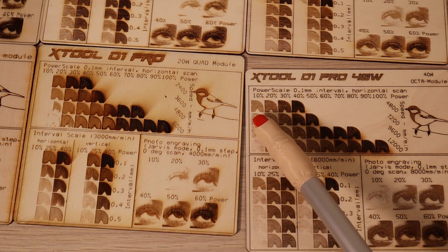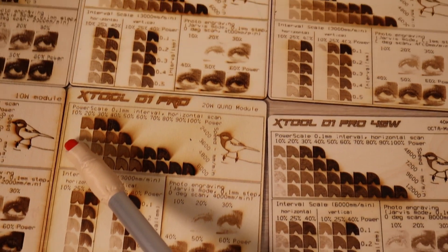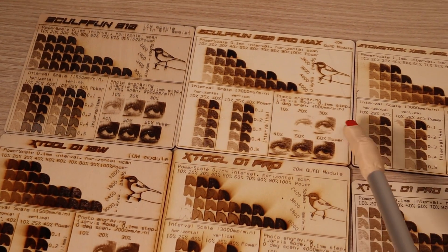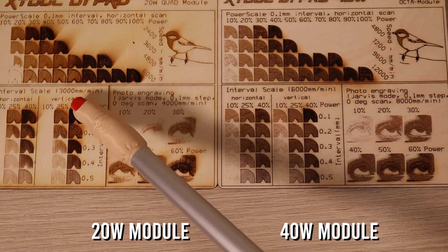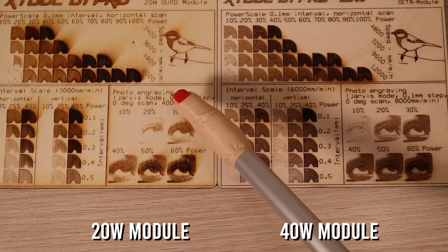Compared to the 20W version, this module is much better at engraving at low power levels. Note that all speeds are twice as high for the 40W module and four times higher than the ones I used for 10W module.